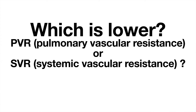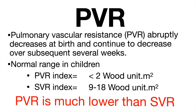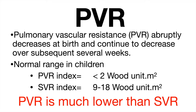Which is lower in a normal individual — PVR or SVR? PVR abruptly decreases at birth and continues to decrease over subsequent weeks. Normal range in children: PVR index is less than 2 Wood units per square meter; SVR index is 9 to 18 Wood units per square meter. PVR is not only lower — PVR is much lower than SVR.